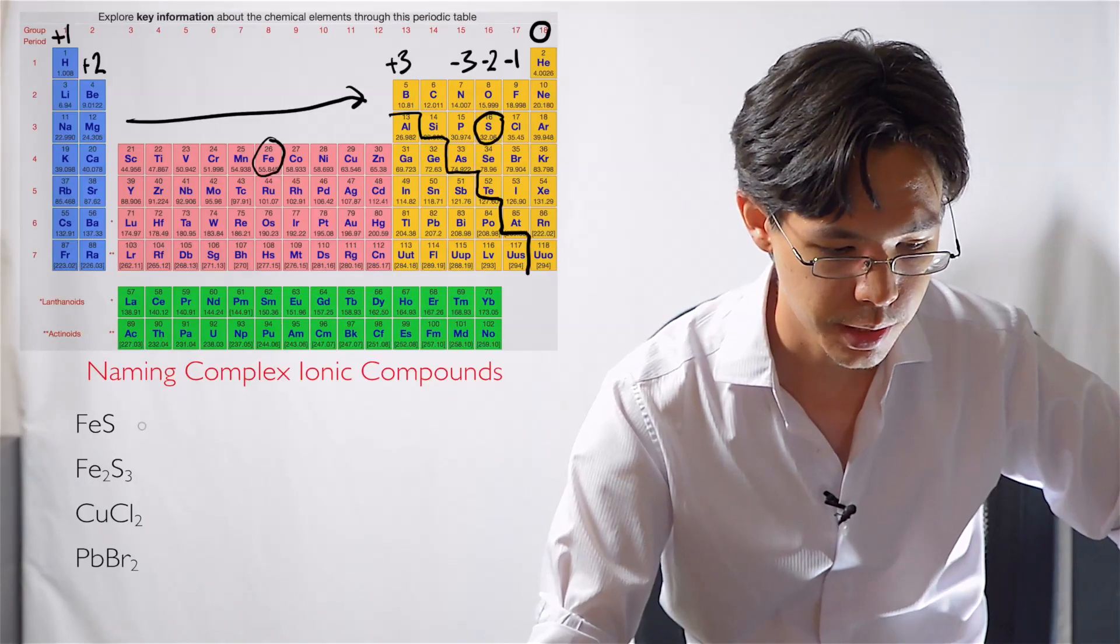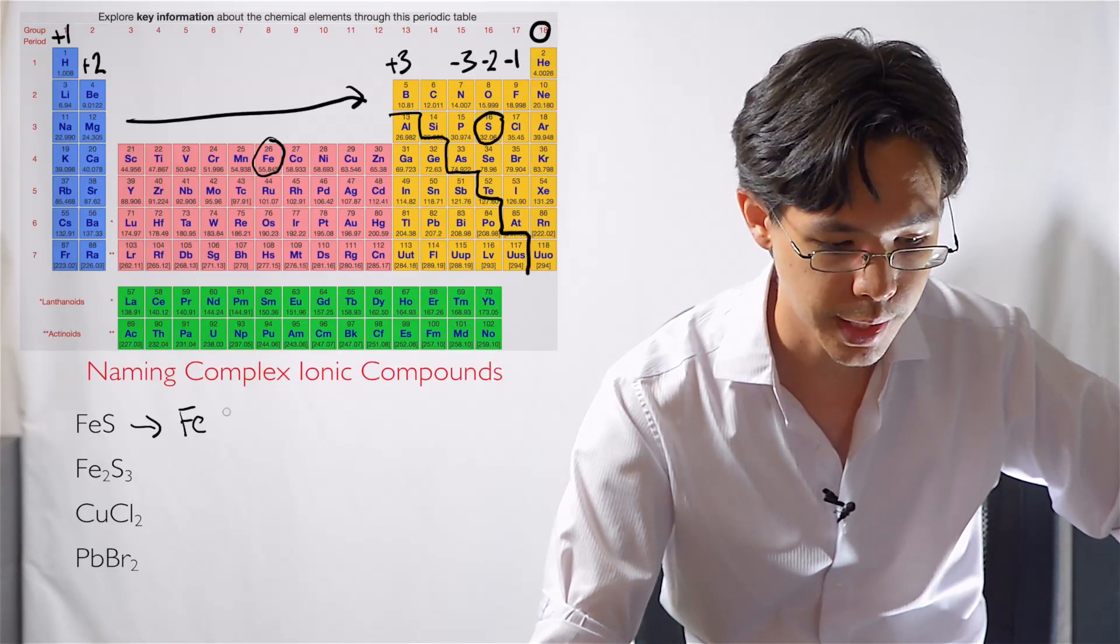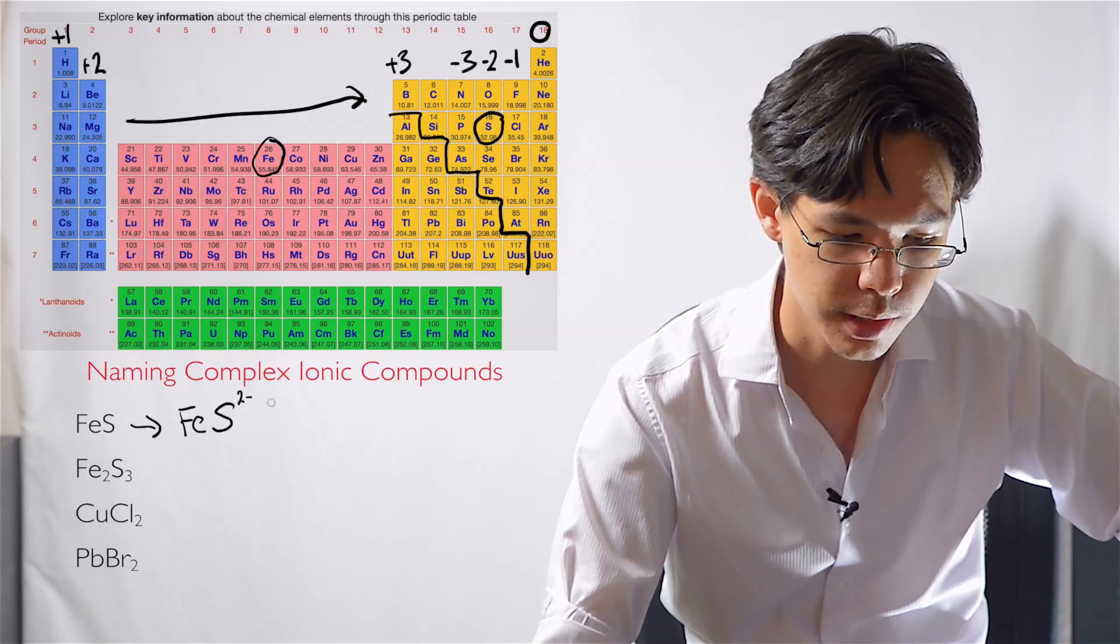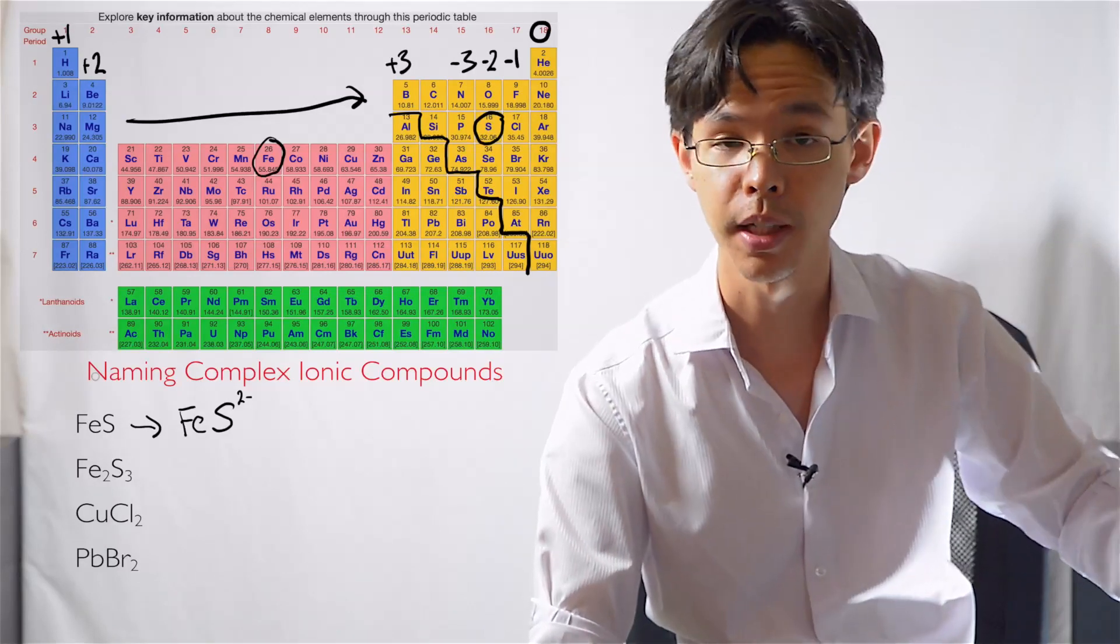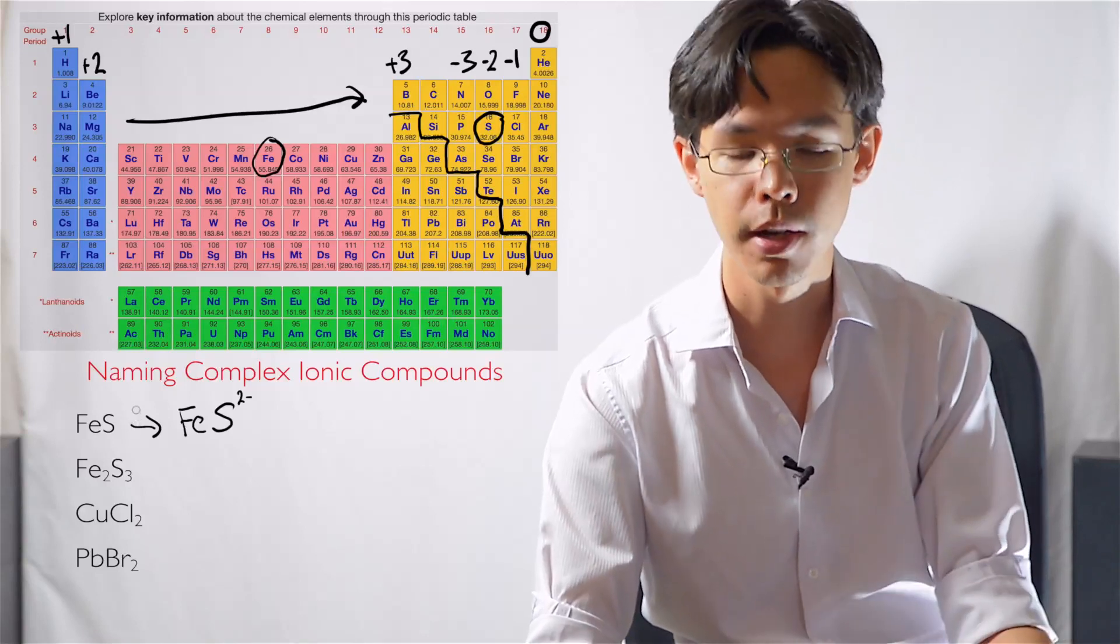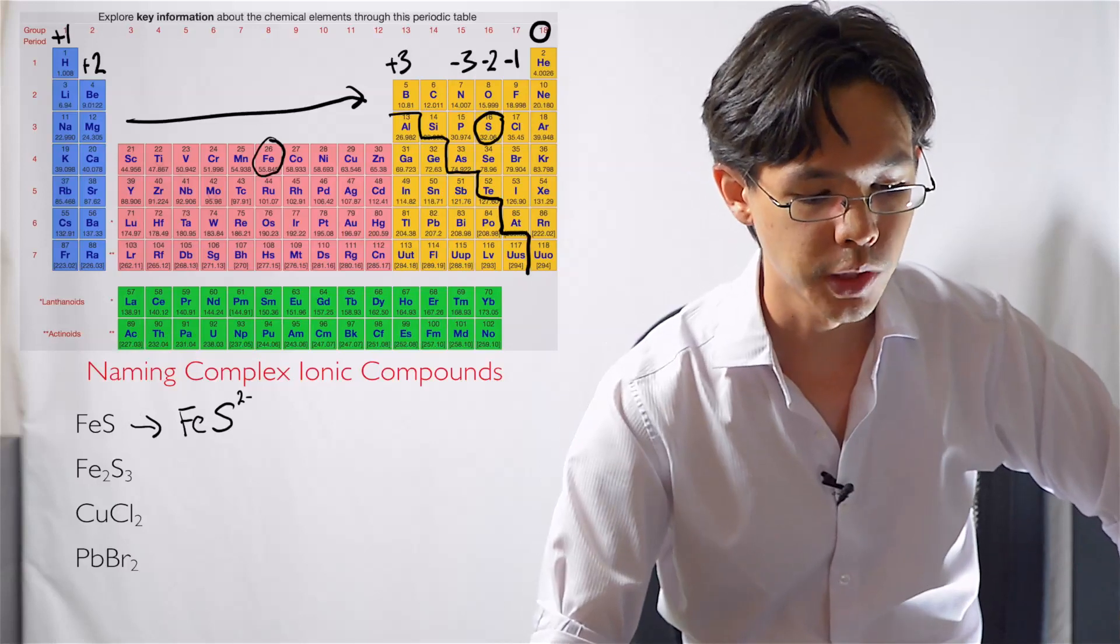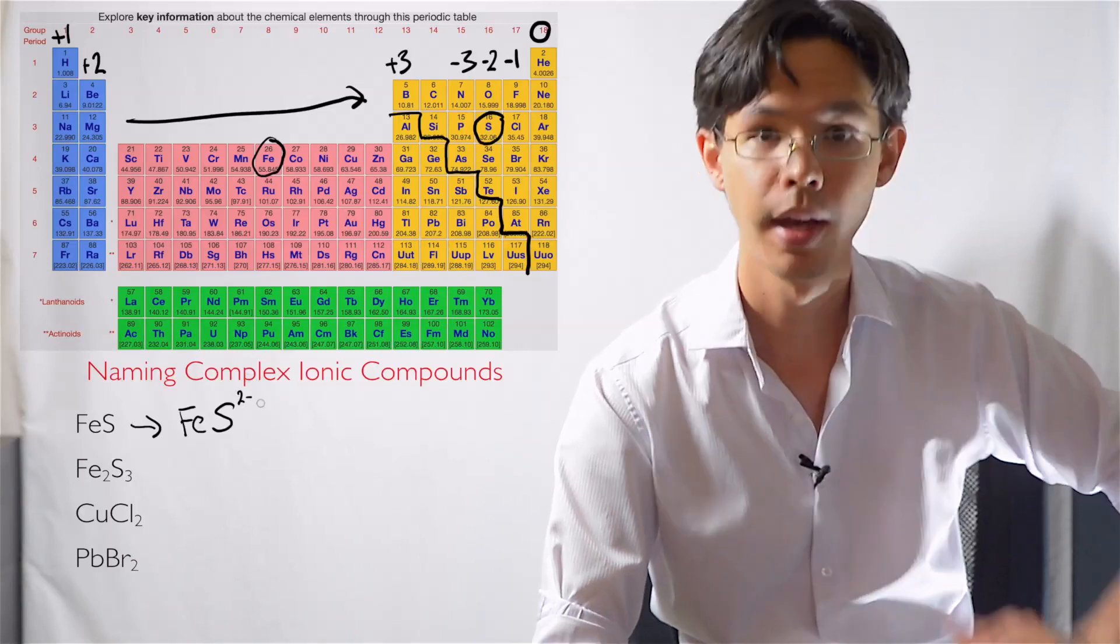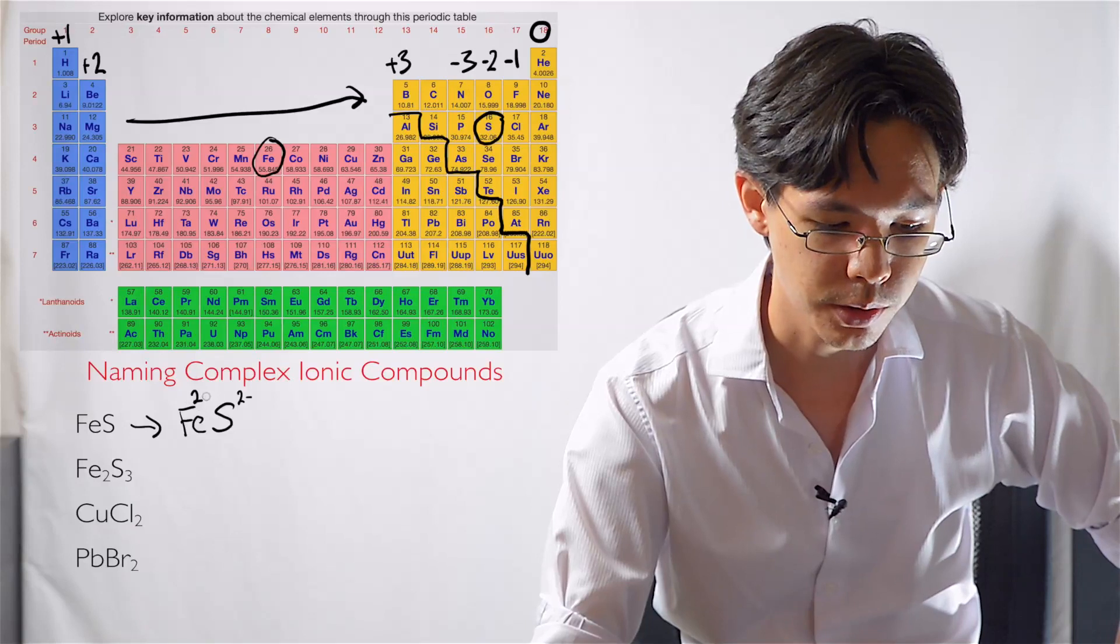Sulfur, when it becomes an ion, it always obeys the rule, which is a negative two charged ion. And from here, we put on our detective caps and work our way backwards. So iron here, we don't know what charge it has yet, but we work it out later. Sulfur, on the other hand, we know forms a two negative charge. Now, since the written formula here, and this goes for most chemical formulas, they don't have charges written on them because they are neutrally charged.